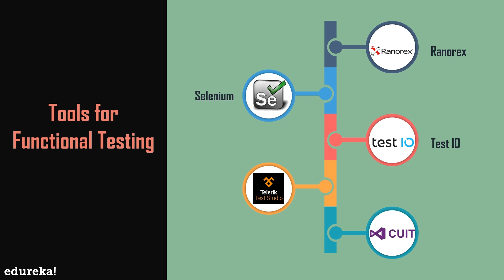Next up we have Test IO. This tool ensures that your web apps, websites, and mobile apps work everywhere by running functional tests on real devices, real browsers, and under real-world conditions. Running functional tests with Test IO lets you call upon the skill and insight of thousands of testing professionals to improve quality. Over 200 customer-obsessed organizations rely on Test IO to ship high quality software faster. Next up is Telerik, one of the most simple and user-friendly testing tools in the market, providing functional, exploratory, performance, and load testing solutions. Though it's not free, its subscription is available at a reasonable amount, and it comes with a Visual Studio plugin requiring knowledge of Visual Script.